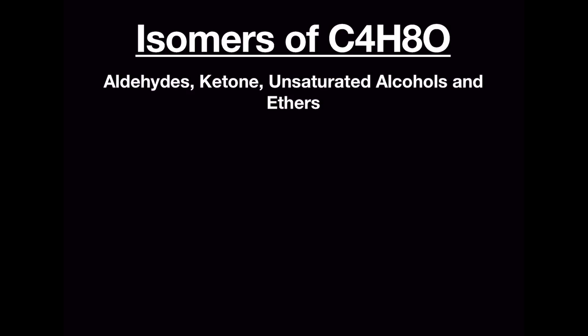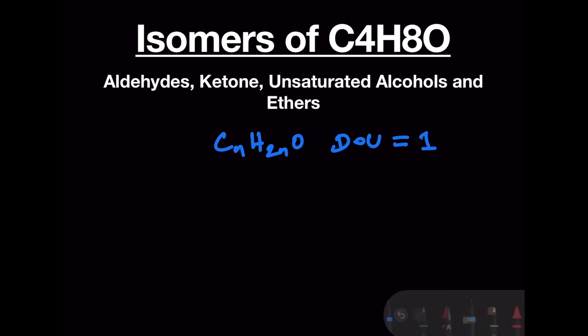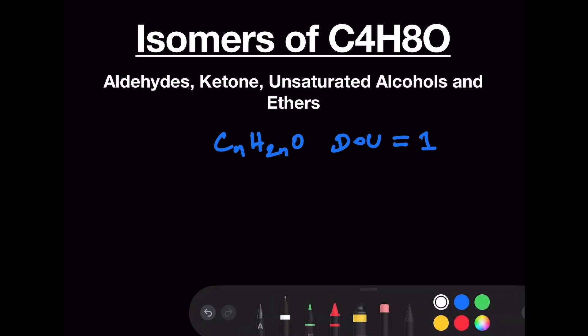Hello everyone. In this video we are going to write down the isomers of C4H8O — in particular the aldehydes, ketones, unsaturated alcohols, and unsaturated ethers. Cyclic alcohols and cyclic ethers are also possible for this elemental composition, which we will see in a separate video. All elemental compositions of the type CnH2nO will have a degree of unsaturation equal to one, and therefore all these different classes of molecules are possible.